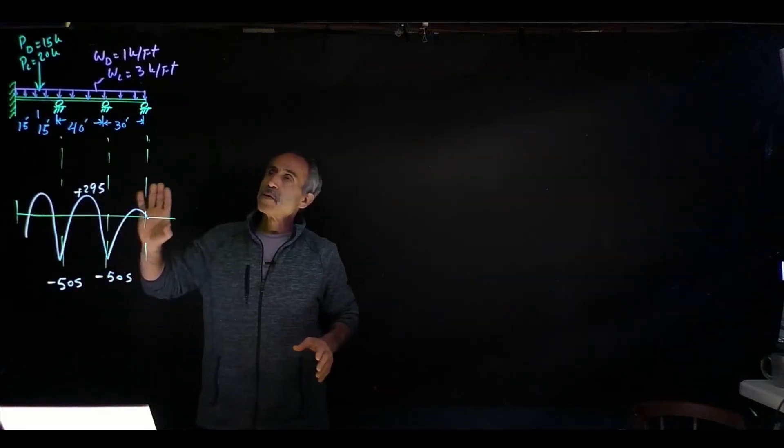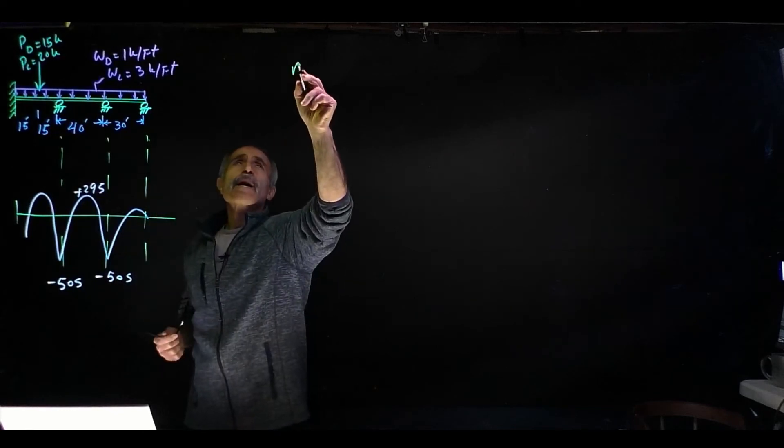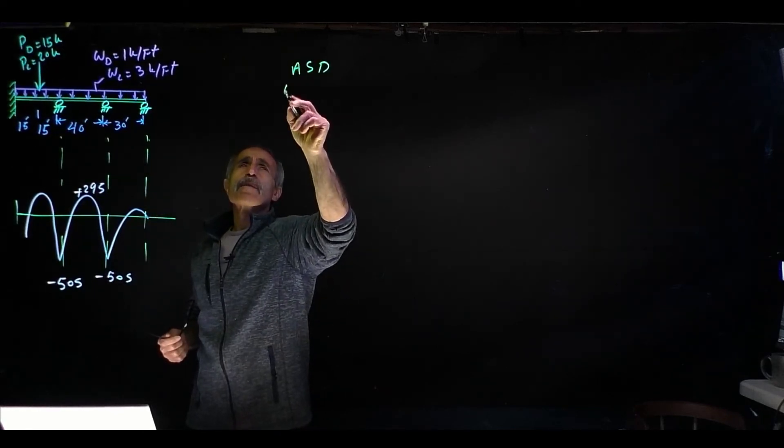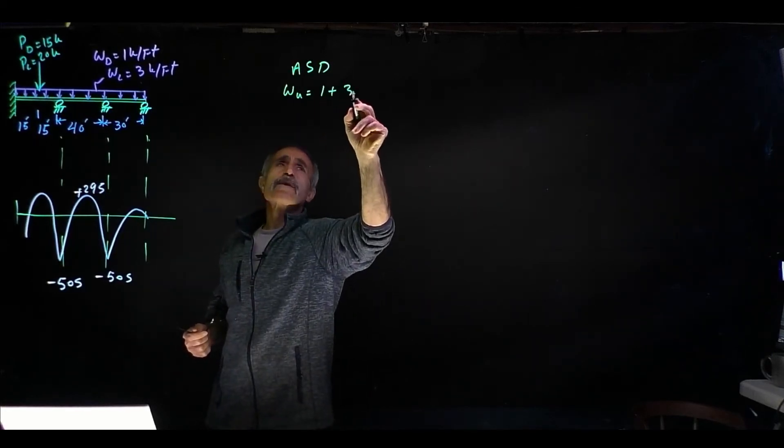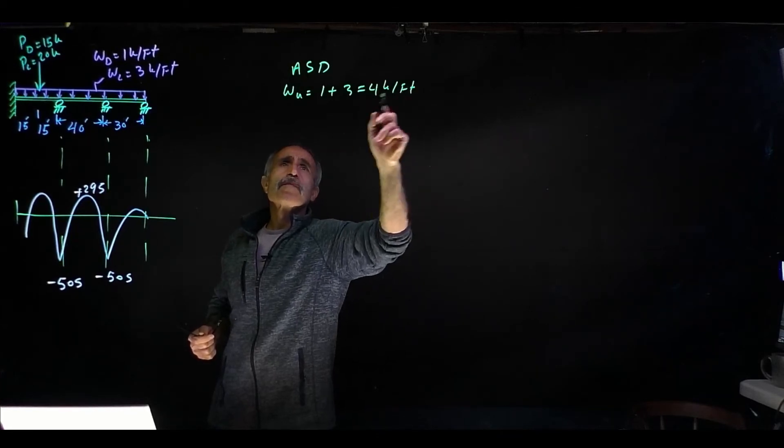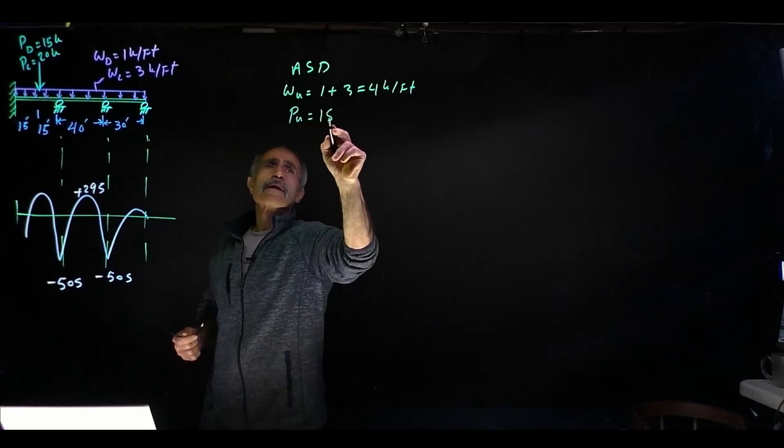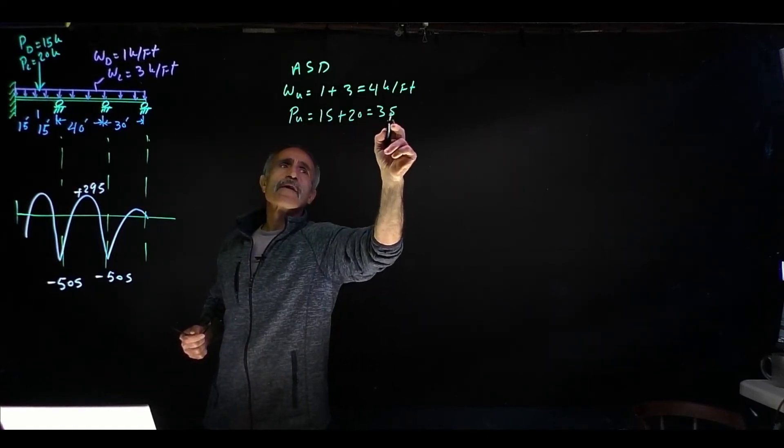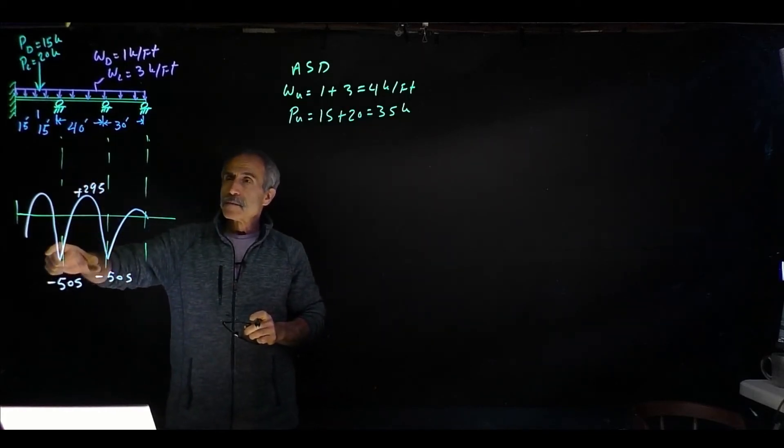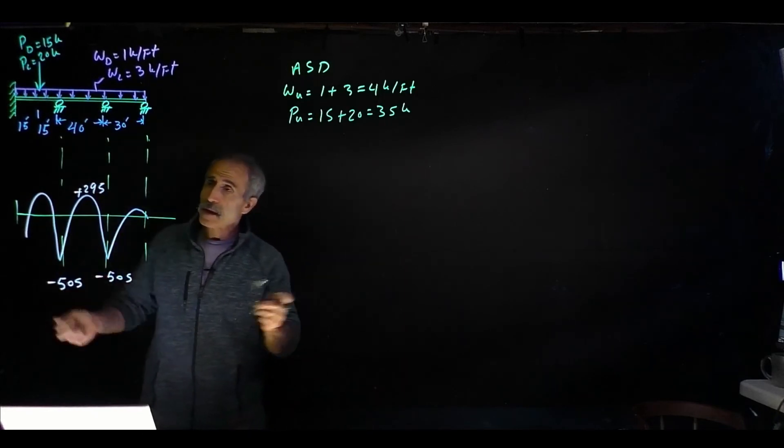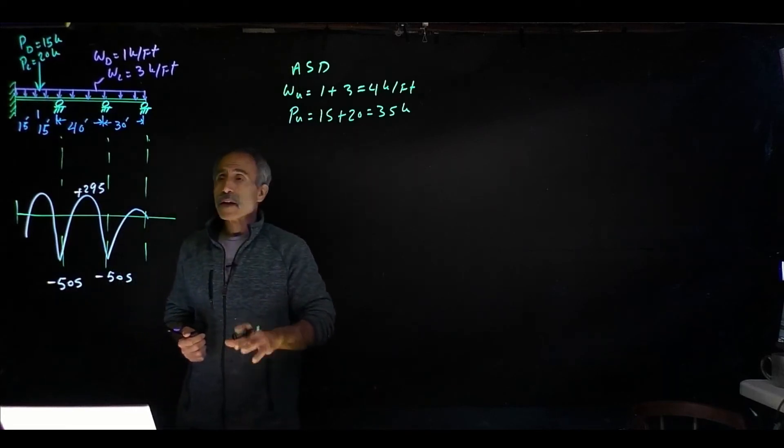Now we're going to go ahead and use allowable stress design method to solve this one, ASD. And our WA comes out to be 1 plus 3, which is equal 4 kip per foot. And PA, it's going to be 15 plus 20, which is equal 35 kip. I'll draw the shear moment diagram here. How I did it, I just went on a computer and plugged that in and I came up with this. I'll show you in a second. I've used Robot Structural Analysis and this is how I came up with it.